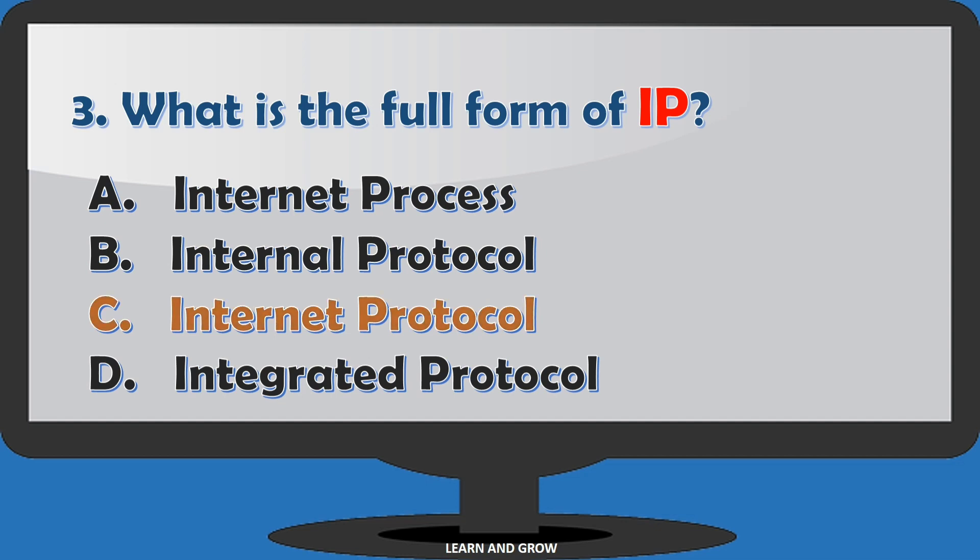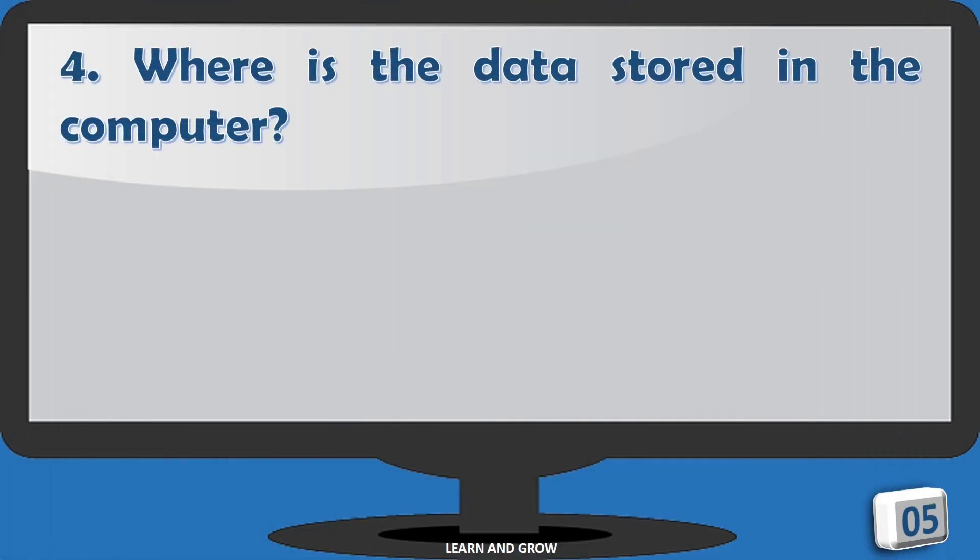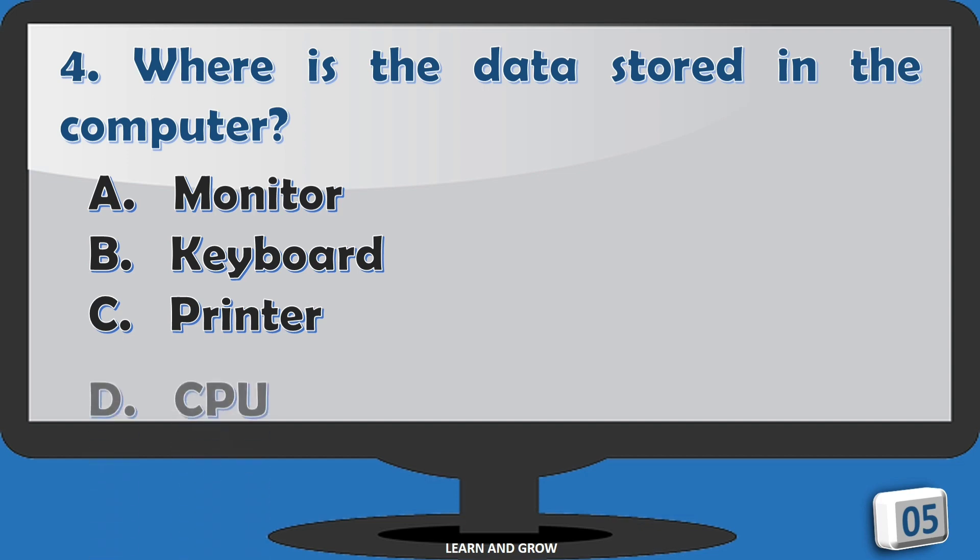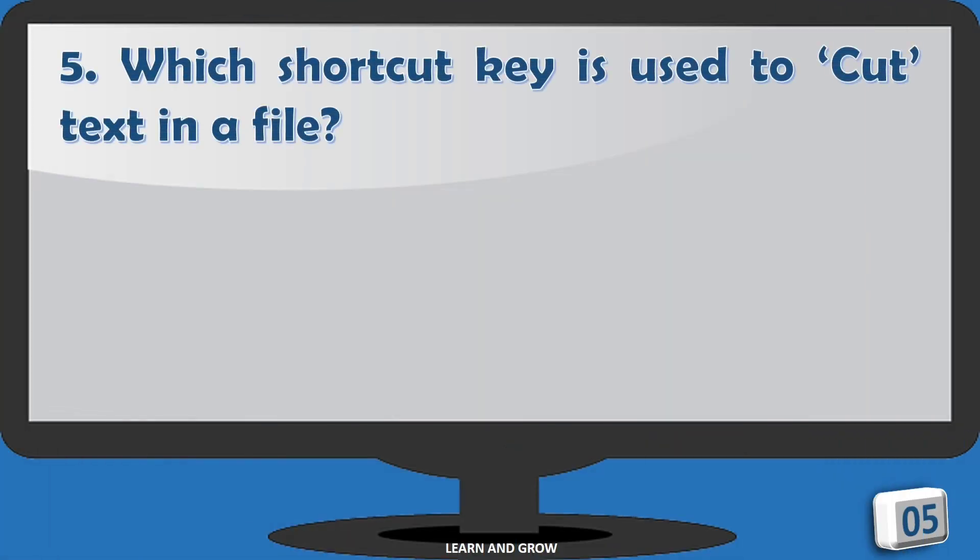Where is the data stored in the computer? Options are: A. Monitor, B. Keyboard, C. Printer, D. CPU. The right answer is option D, CPU. Which shortcut key is used to cut text in a file?